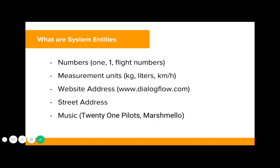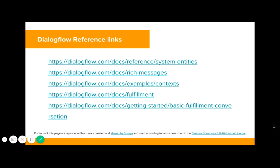System entities are provided by Dialogflow and Google, so you get a bunch of pre-built entities that you don't need to code yourself — like numbers, flight numbers, measurement units such as kilograms, liters, kilometers per hour, website addresses, street addresses, and music entities like band names such as Twenty One Pilots or Marshmello. So before building any entity, please check out the system entities already available in Dialogflow. You can find them in the references — the first link is 'Reference System Entities.' You'll also find links for rich messages, context, fulfillment, and getting started, but you don't need to do this right now — we'll go through all of it in the class.